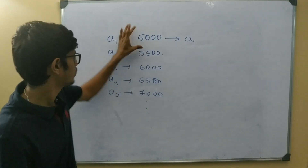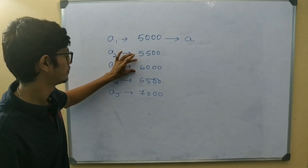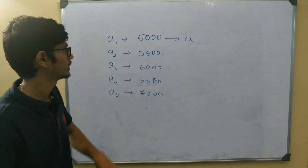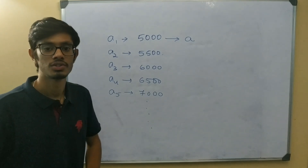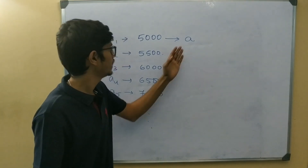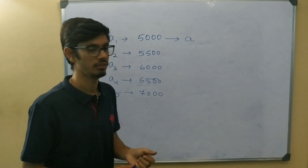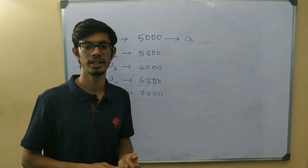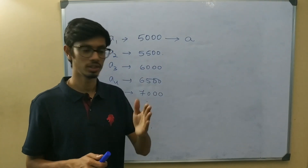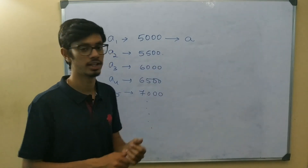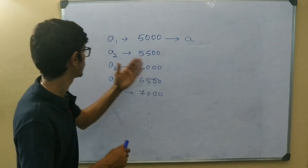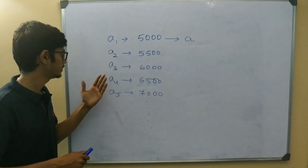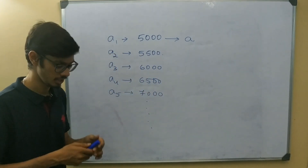Each one of these values is called a term. The first term is called a1, that is just 'a'. The first term is a1, the second term is a2, third is a3, fourth is a4, fifth is a5 — it's that simple.